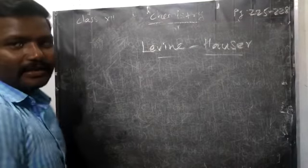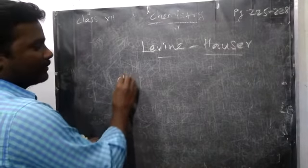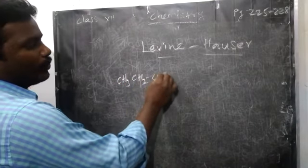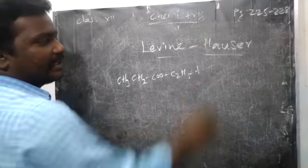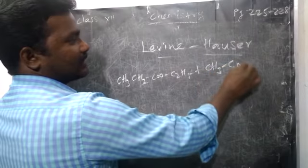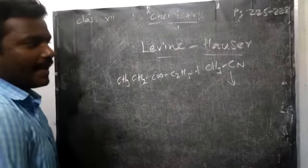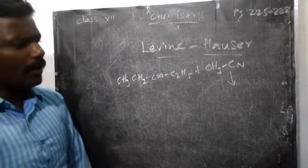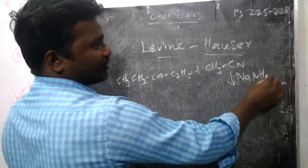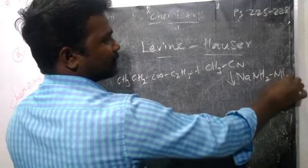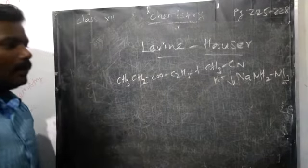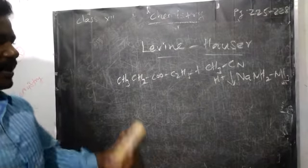Here we are going to take ethyl propionate. Propionate means CH3, CH2, COO, then ethyl group — which is treated with ethanenitrile, that means CH3, CN group. Here we have to take the catalyst: sodamide (NaNH2) and also we have to take acid presence H⁺. Now what type of condensation reaction will take place?